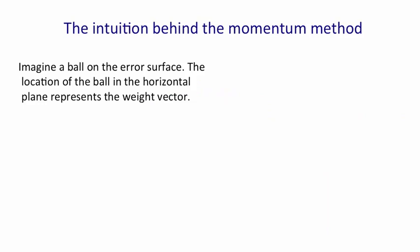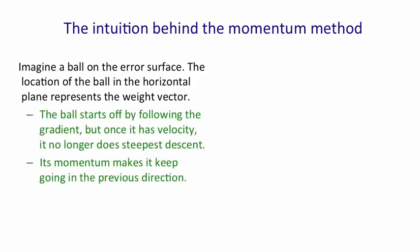I'm going to start with the intuition behind the momentum method. We think of a ball on the error surface where the location of the ball in the horizontal plane represents the current weight vector. The ball starts off stationary, and so initially it will follow the direction of steepest descent. It will follow the gradient. But as soon as it's got some velocity, it will no longer go in the same direction as the gradient. Its momentum will make it keep going in the previous direction.